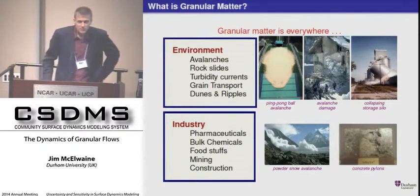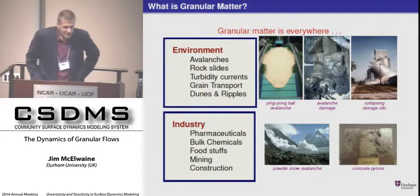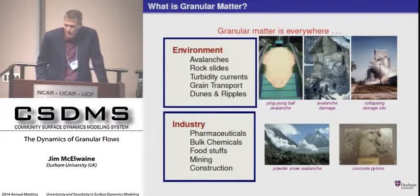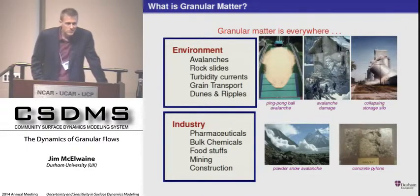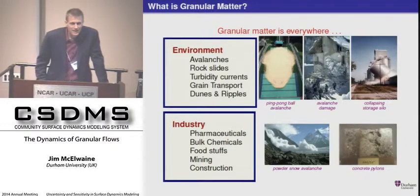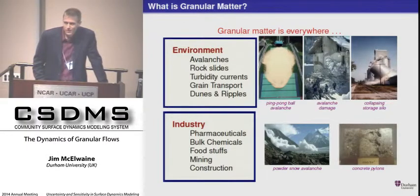Many industrial materials go through a granular processing stage — about 40% by value — so there's a huge amount of money involved. What you can see here is a storage silo that's collapsed. These things have been built — there are millions of them all over the world. You'd think engineers would know how to build them, but it's a continuous problem because the underlying equations that accurately describe the stress distribution and flow in granular material are not known. People build large silos or mixing drums and then they don't operate, and they have to hit them with hammers or rebuild them.